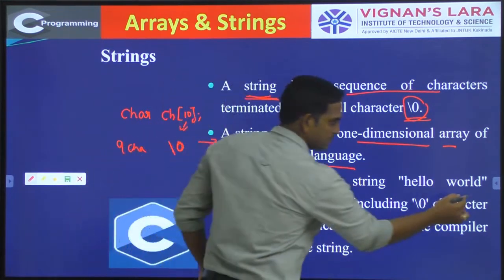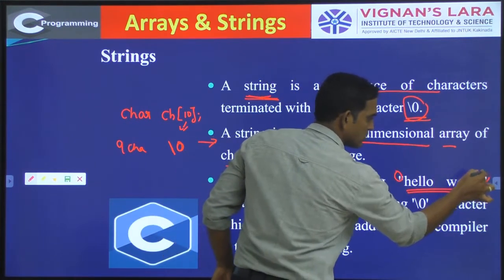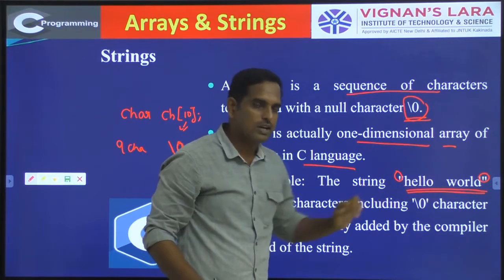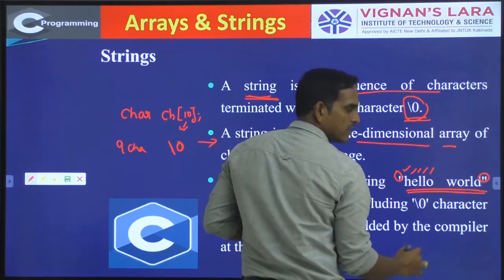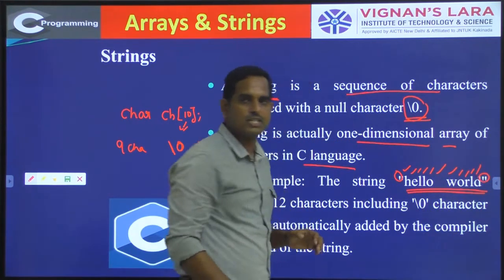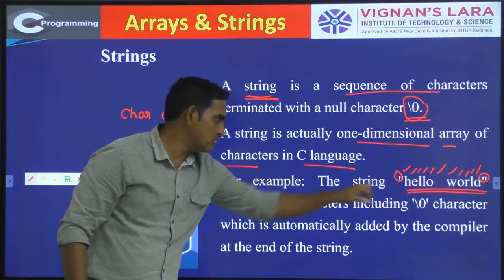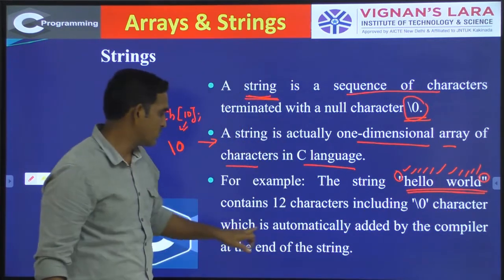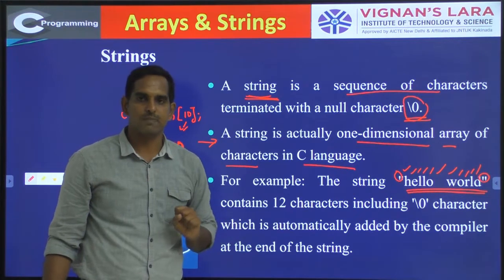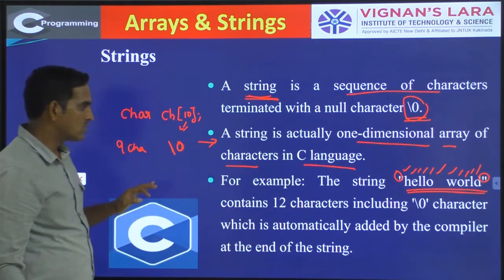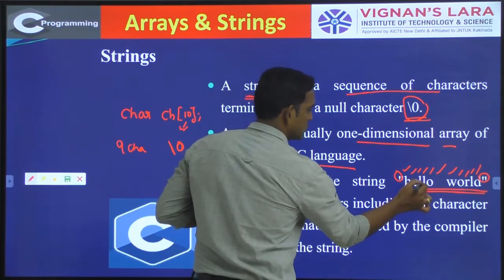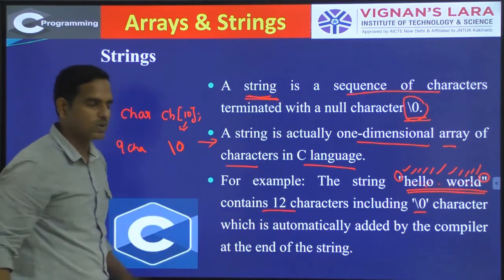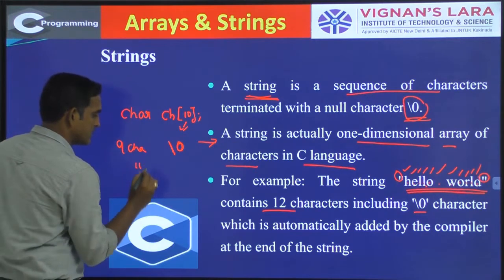For example, the string 'hello world' — each and every character H, E, L, L, O, and the space is also one character, W, O, R, L, D. So each and every character will be counted here. This counts 11 characters including the space, followed by the null character '\0', which is automatically added by the compiler at the end of the string. So completely we will have 12 characters in that string.